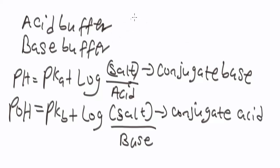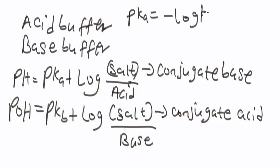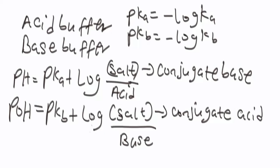The pKa and pKb values are usually given in the problem you are asked to solve for each acid buffer or base buffer. The pKa is the negative log of Ka, whereas the pKb is the negative log of Kb. Having known this, let's now solve a typical problem to understand how to apply this formula.